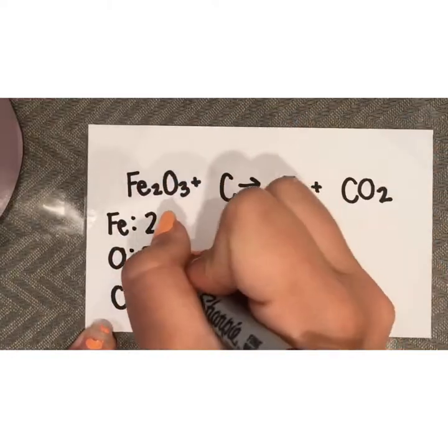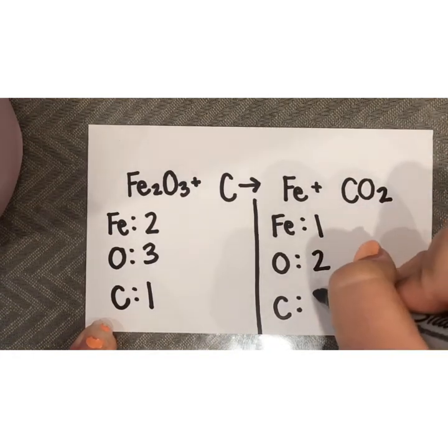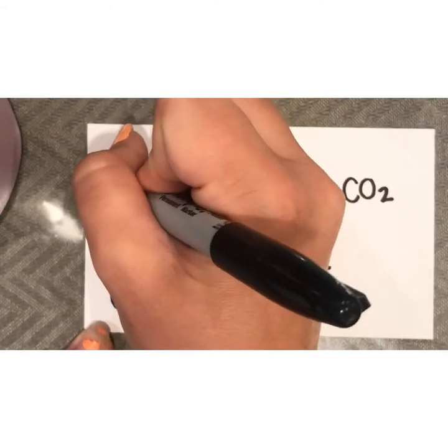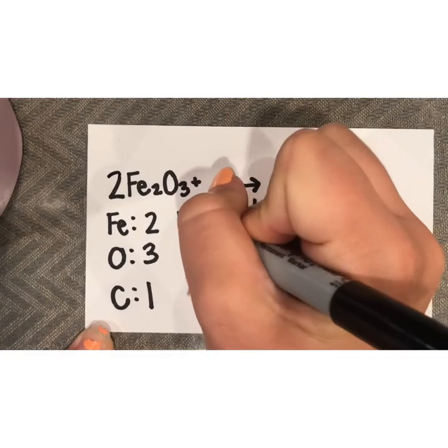Now count up how many of each atom there is and write the number next to it. This is to keep track of our numbers so we can ensure a balanced equation. From here, go through and balance everything out. Start with odd numbers first and make them even.